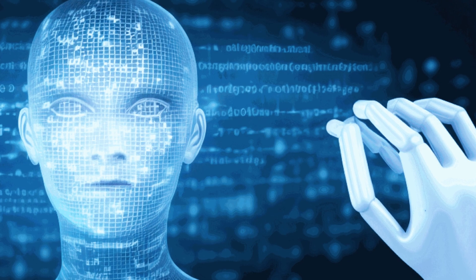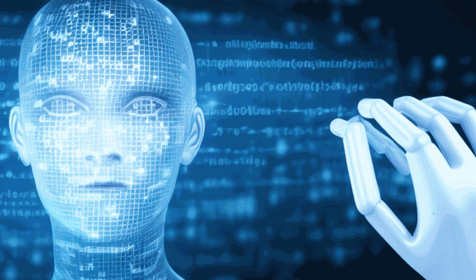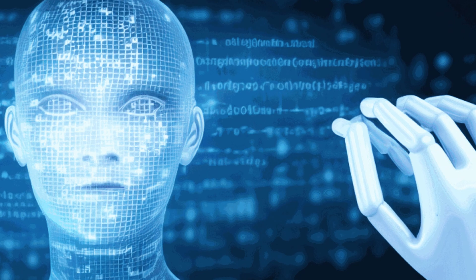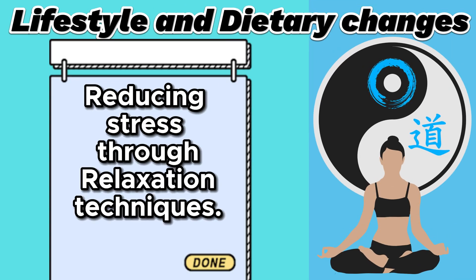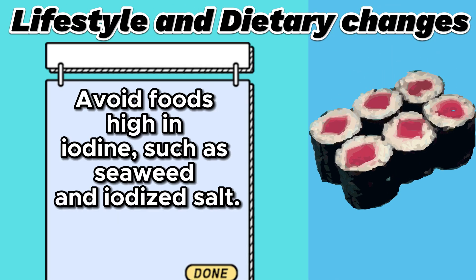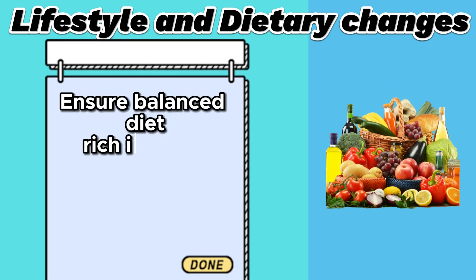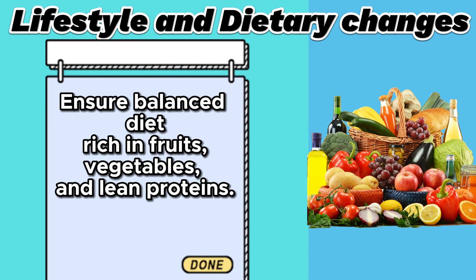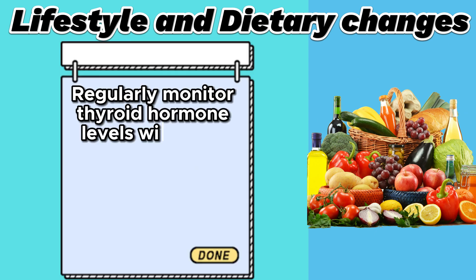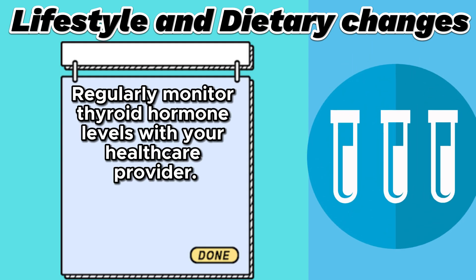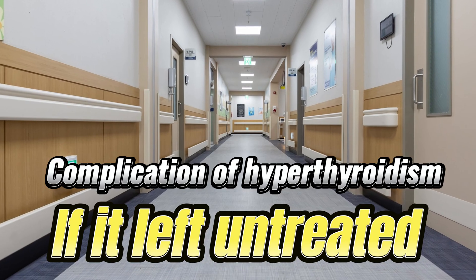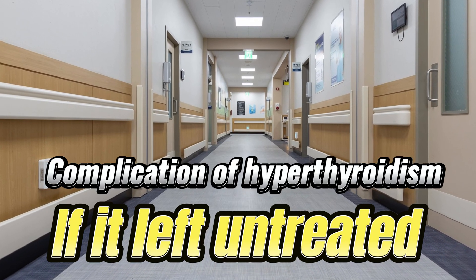In addition to medical treatments, some lifestyle and dietary changes can help manage hyperthyroidism: reducing stress through relaxation techniques, avoiding foods high in iodine such as seaweed and iodized salt, ensuring a balanced diet rich in fruits, vegetables, and lean proteins, and regularly monitoring thyroid hormone levels with your healthcare provider.